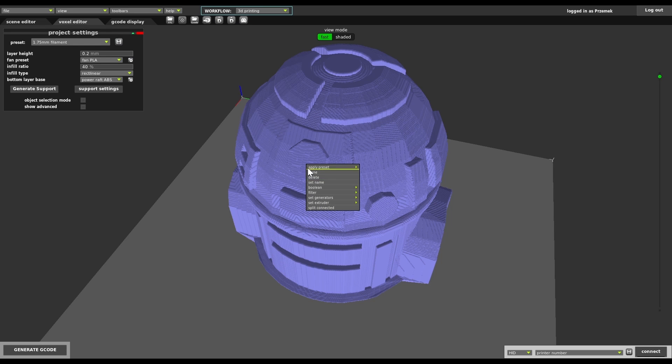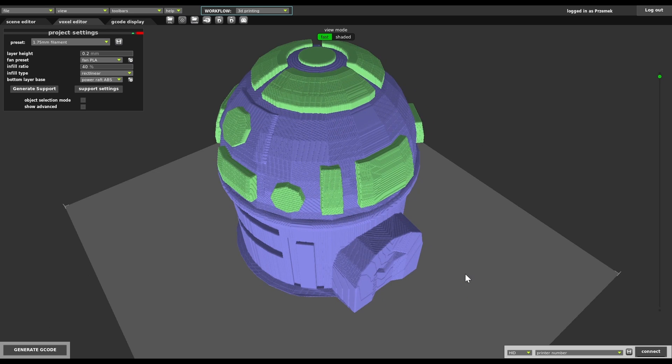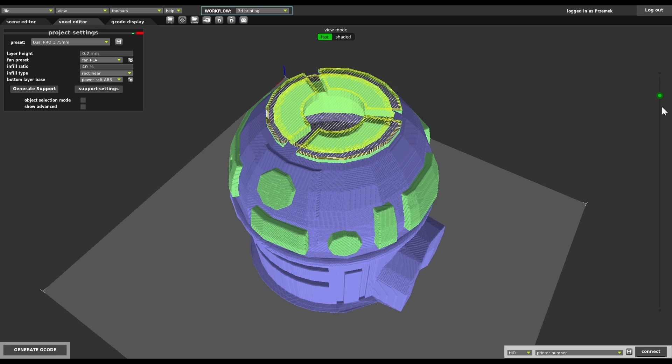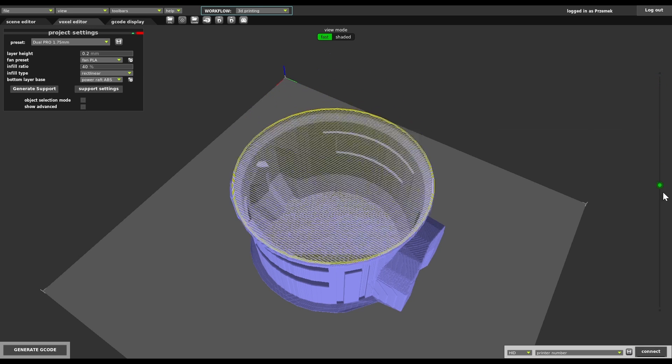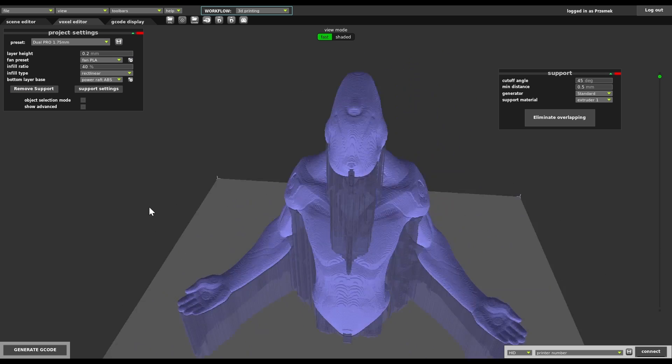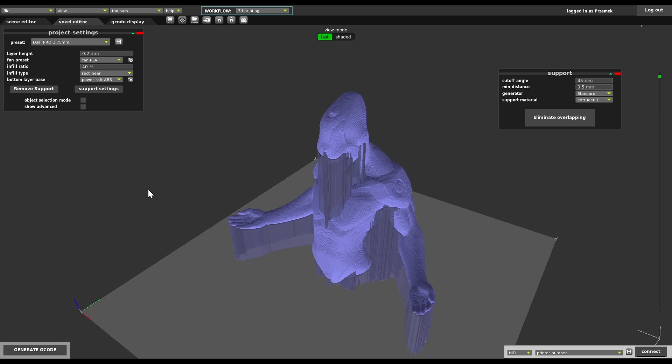The Voxelizer interface allows you to define which part of the model is printed with which material. We just need one right click for that, and we can easily preview each layer even before we generate G-code. We can generate the support by one click as well.